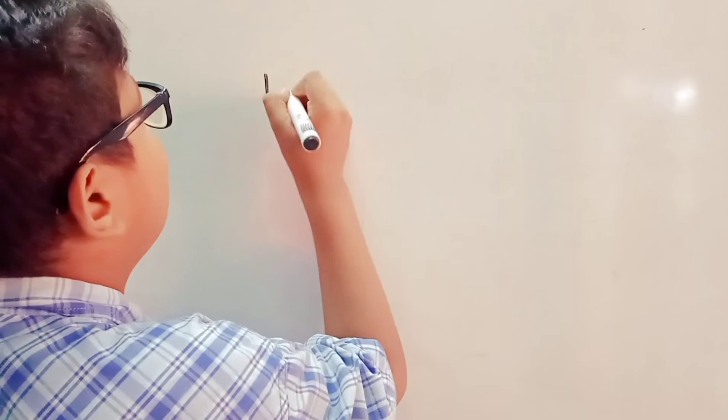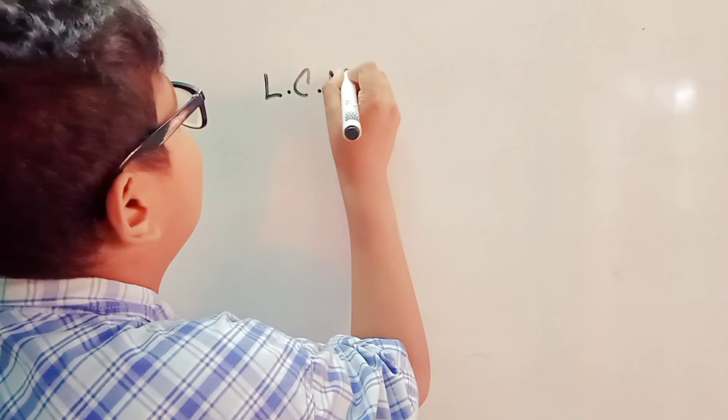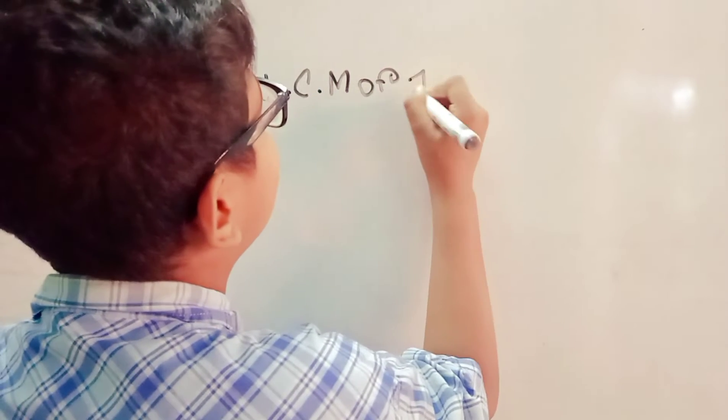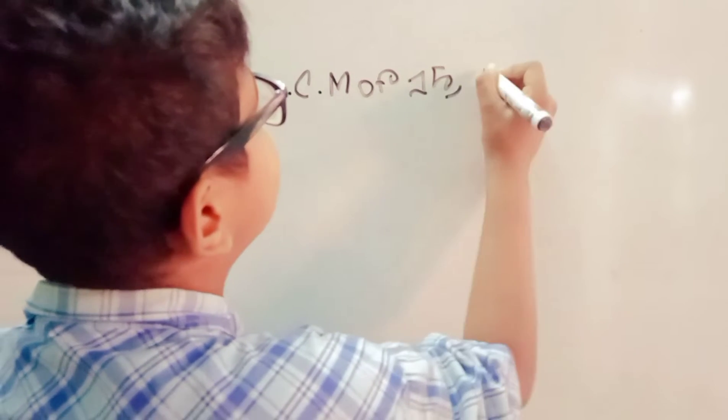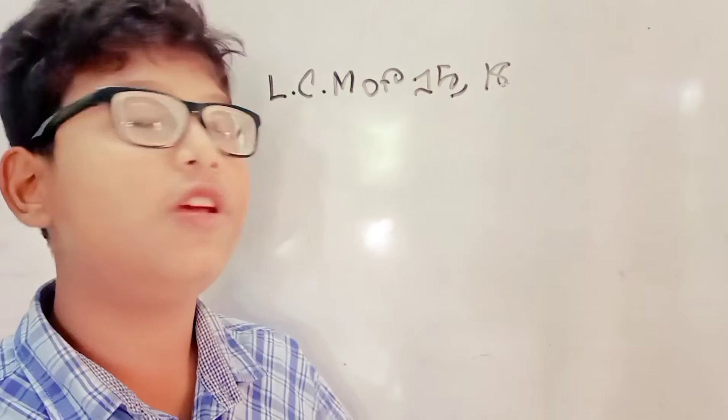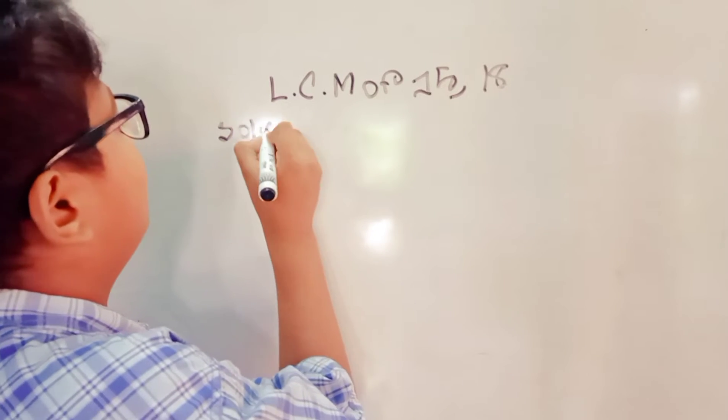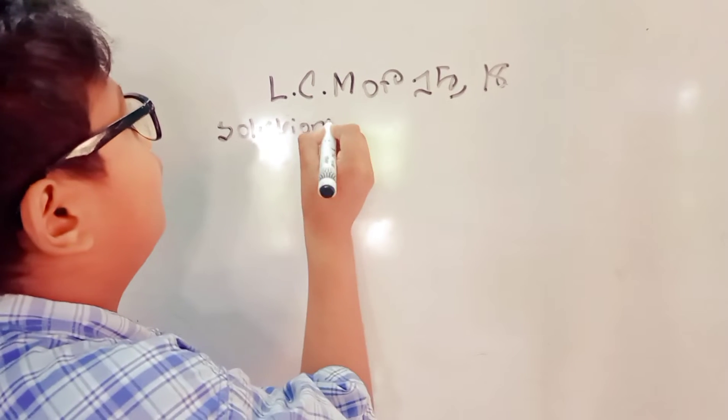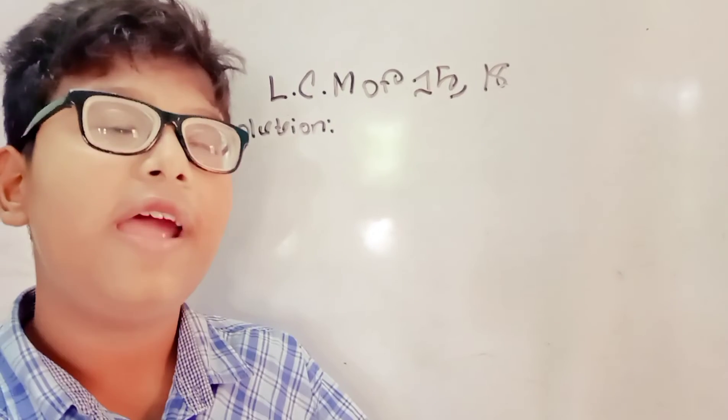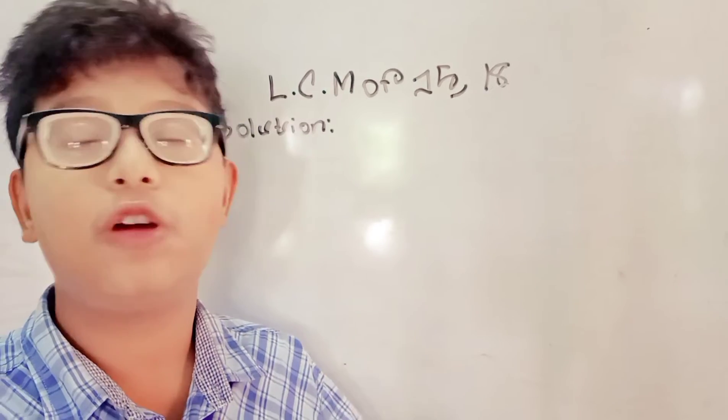LCM of 15 and 18. We can do it like this way. Write each number as a product of primes.